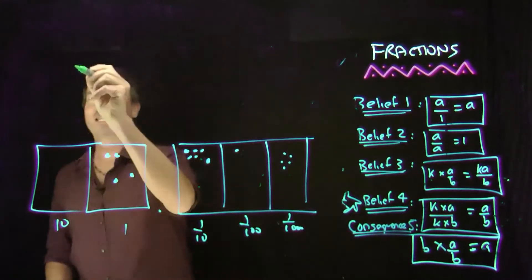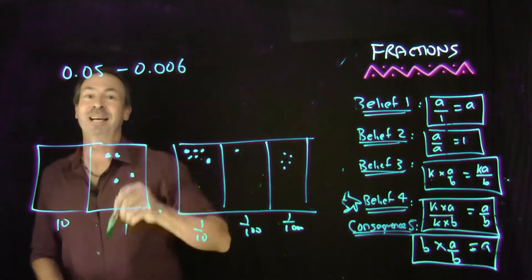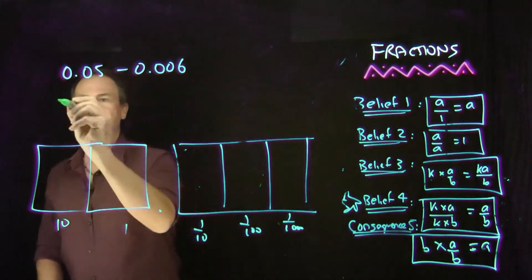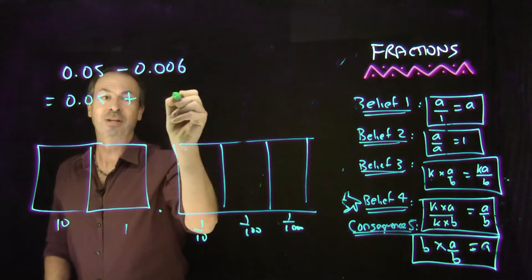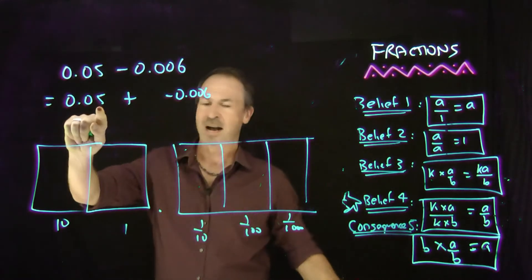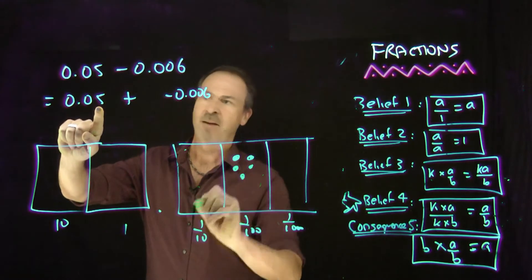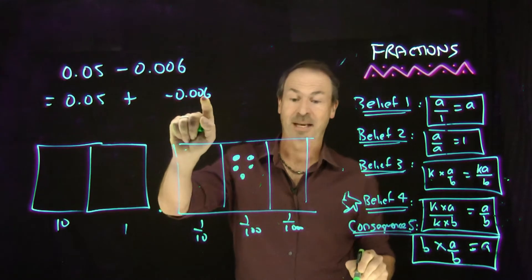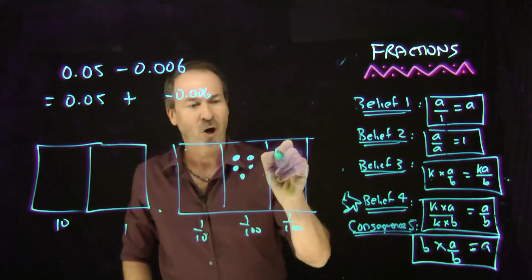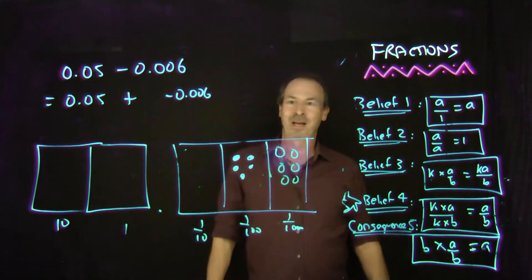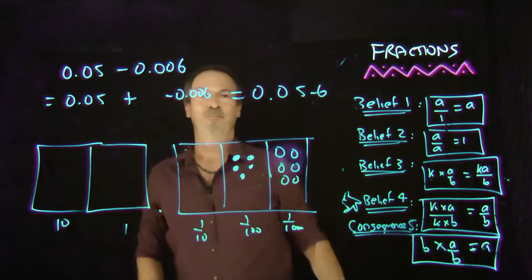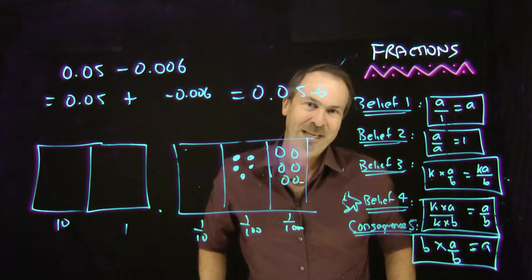Let me try a nasty one — subtraction. 0.05 take away 0.006. I don't believe in subtraction; to me, subtraction is the addition of the opposite. So this is really 0.05 plus the opposite of 0.006. I've got 5 hundredths — five positive dots — plus the opposite of 6 thousandths, which means 6 anti-thousandths: open circles. The answer I can see right now is 0.05 with negative 6 in the thousandths. Most people don't like negative numbers in a decimal place.